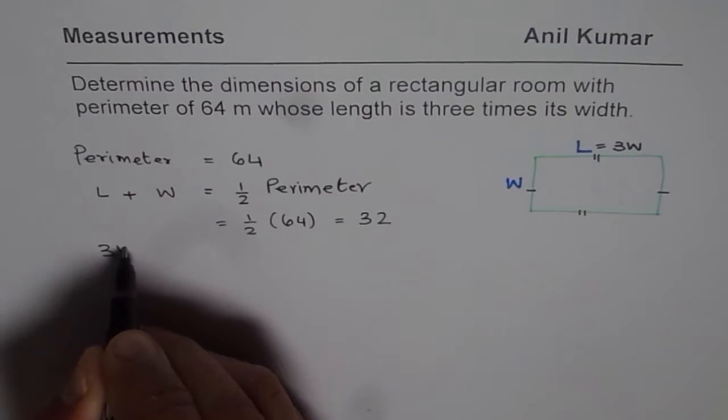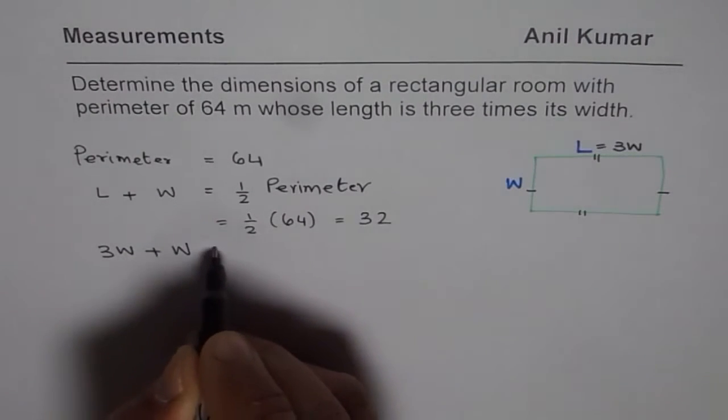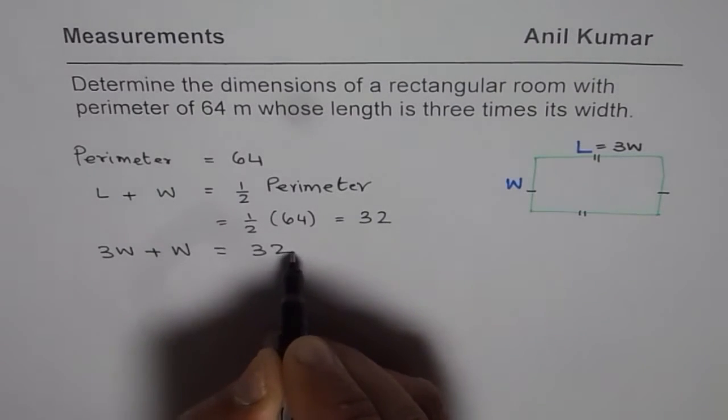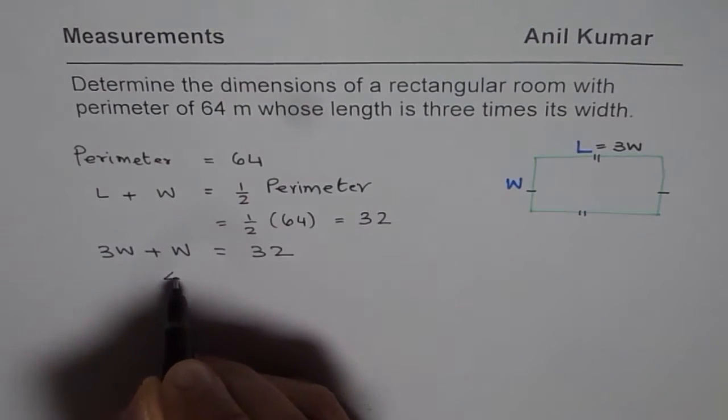So if I do that, we get three W plus one W is equals to 32. Three W plus one W is four widths.